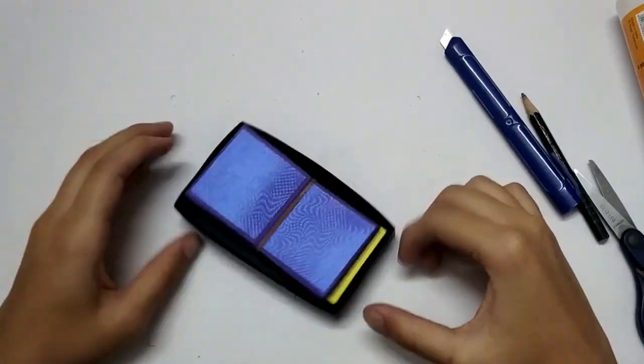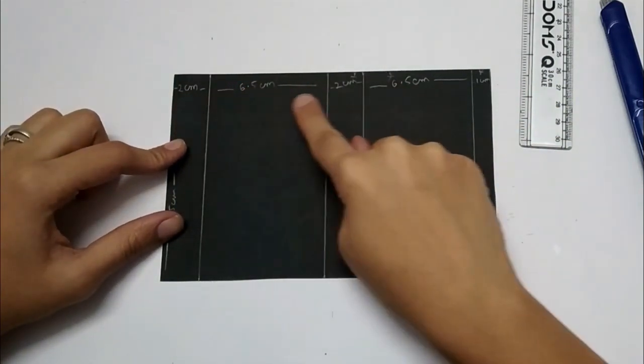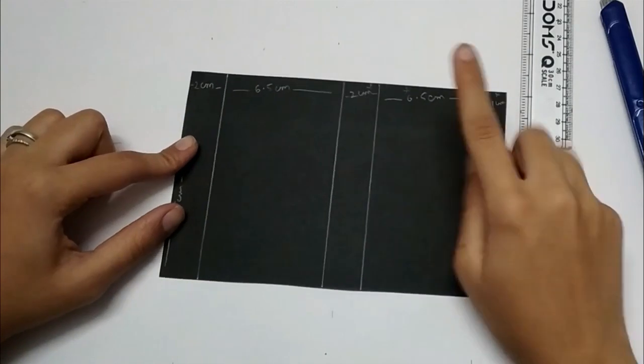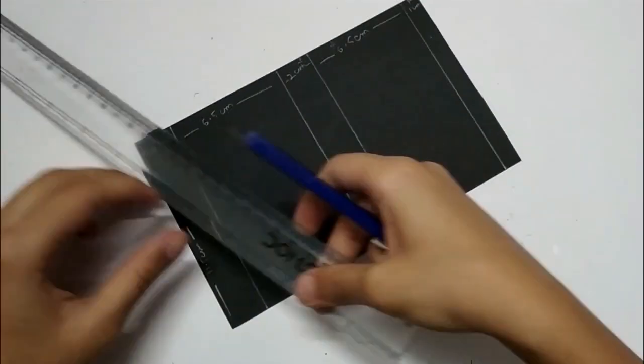Now as you can see it's perfect, keep it aside. Take another sheet, mark 2 cm, 6.5 cm, 2 cm, 6.5 cm, 1 cm, and here 11.5 cm.